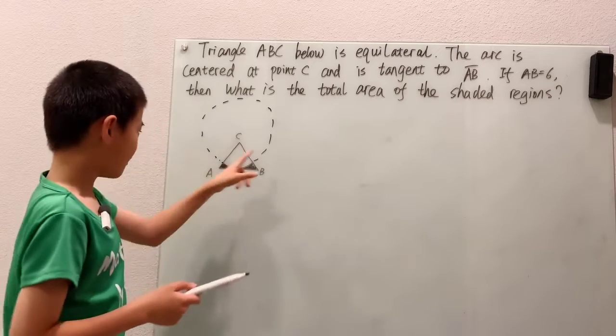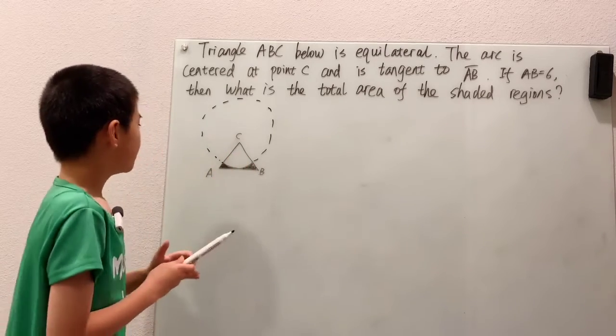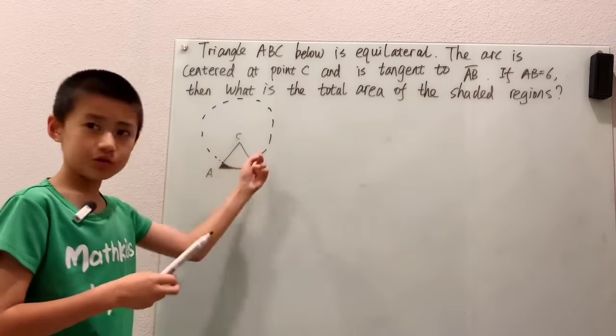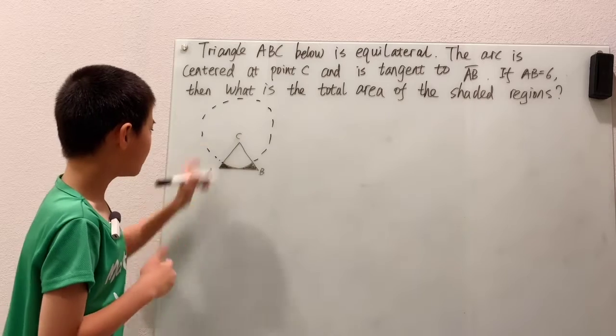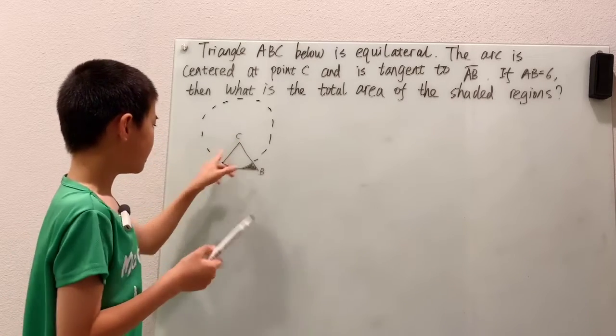Now, we definitely can't cut this already weird shape up into even weirder shapes. So, what we can see here is that these two shaded regions, well they're part of triangle A, triangle ABC,